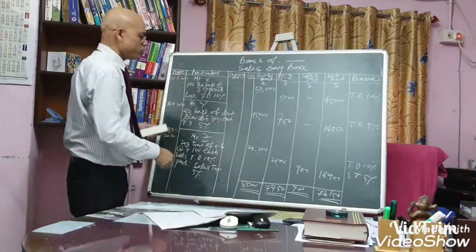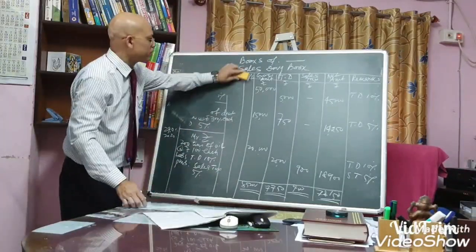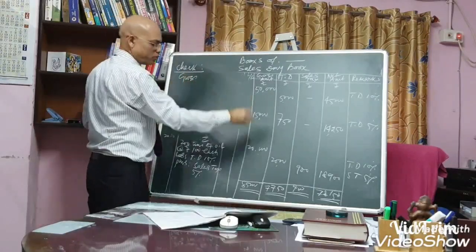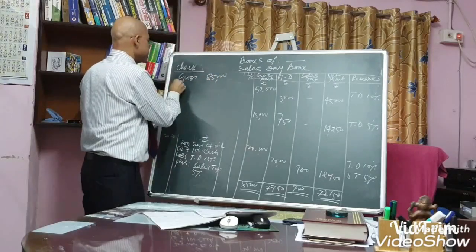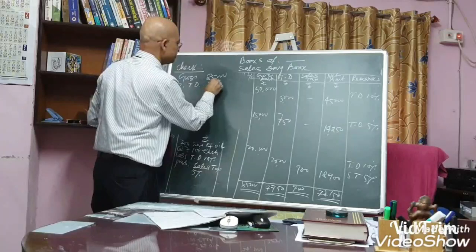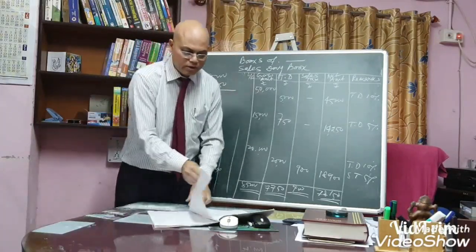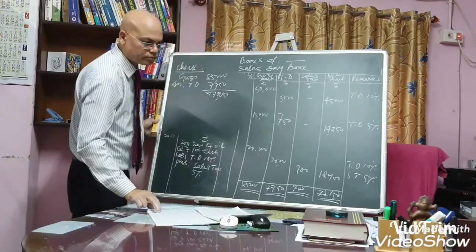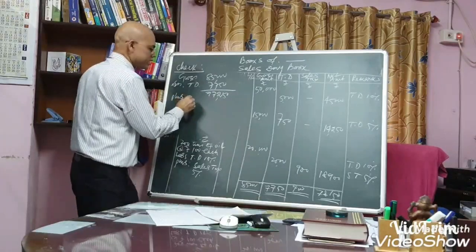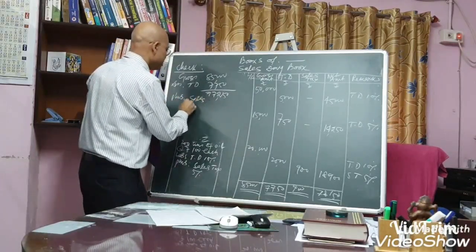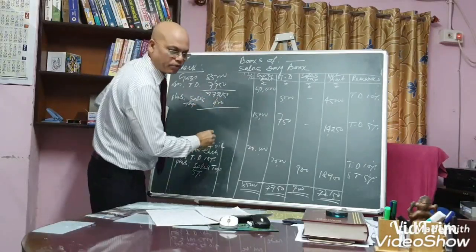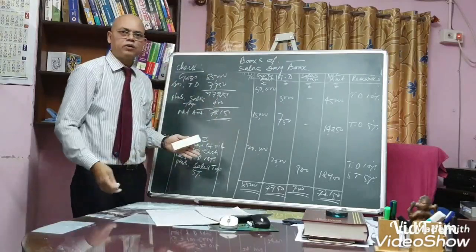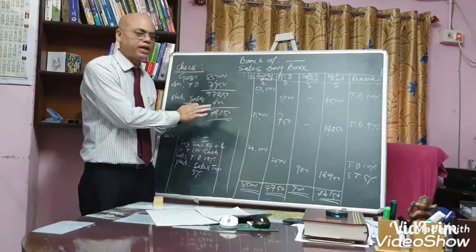Again, students, when you work out the sales day book, you should check your answer. Cross-check: gross amount was 85,000, less trade discount 7,750, that is 77,250, plus sales tax 900, therefore net amount is 78,150. You can cross-check your answer in this way and be sure that your sum is right. Thank you.